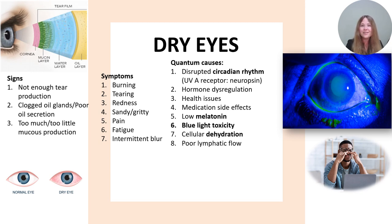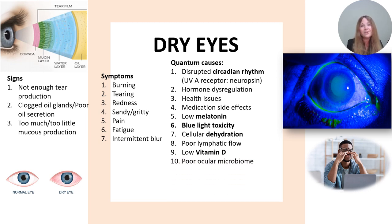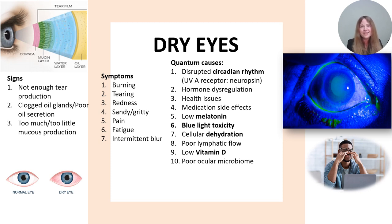Our lymph flow can be adversely affected and actually get stagnant. The conjunctiva requires good lymph flow to get rid of toxins that build up, so if lymph flow is stagnant, the eyes are irritated and full of toxins. There are also vitamin D receptors and melatonin receptors in nearly every part of the eye, including our cornea, conjunctiva, and lids. Low vitamin D levels and low melatonin levels will contribute to the poor functioning of those cells. There's also a microbiome in our eyes, just like we have good bacteria in our guts and on our skin, and we require good circadian rhythm, a healthy immune system, and full-spectrum light to maintain an adequate microbiome.